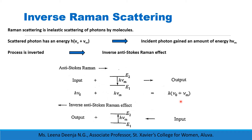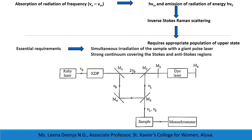If this process is inverted — that means if the molecule in the lower energy level collides with a photon of energy h(ν₀ + νM) — this molecule can absorb energy from this photon and jump to higher energy level E2. Then the scattered photon energy will be equal to h·ν₀. The absorption of radiation of frequency (ν₀ − νM) by the molecule results in a decrease in energy of the scattering molecule by h·νM and emission of radiation of energy h·ν₀. This process is inverse anti-Stokes Raman scattering.